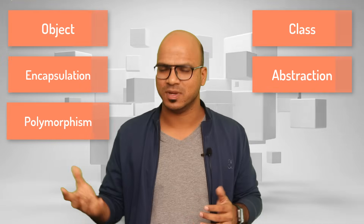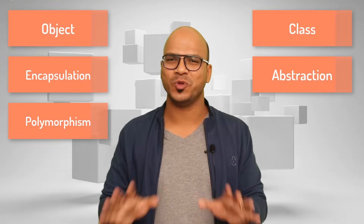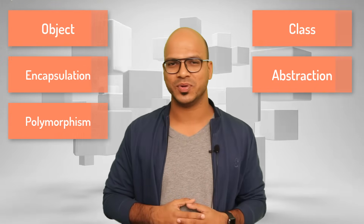In OOP we have many concepts: objects, classes, encapsulation, abstraction, and polymorphism. These are some weird-sounding words but don't worry, we will cover everything in detail in subsequent tutorials. There's one important thing to discuss here about classes, because we have objects and we have classes. It doesn't matter which language you work on — Java, C++, C# — any OOP language always uses objects and classes together.